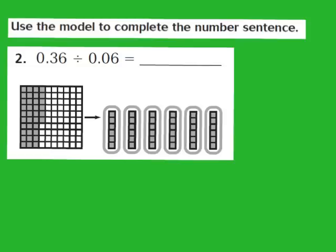Let's take a look at question number 2. Question 2 says: use the model to complete the number sentence. For question 2, they give us 36 hundredths divided by 6 hundredths. When we divide decimals using models, there are some steps that we need to follow.